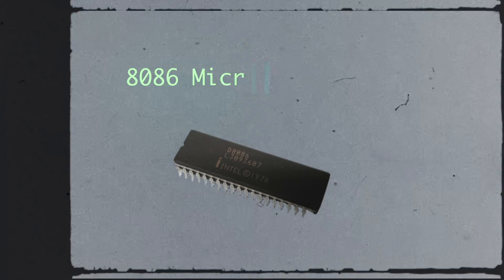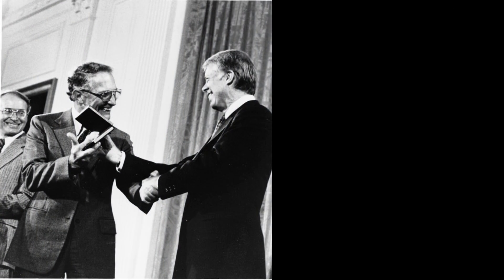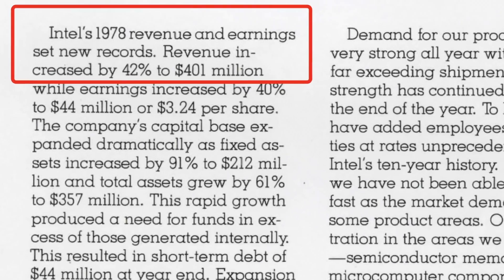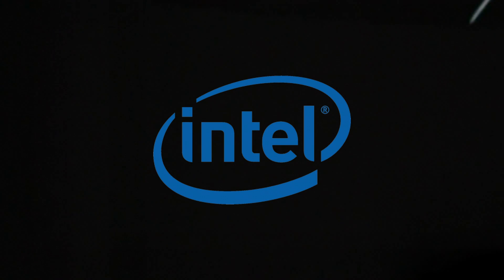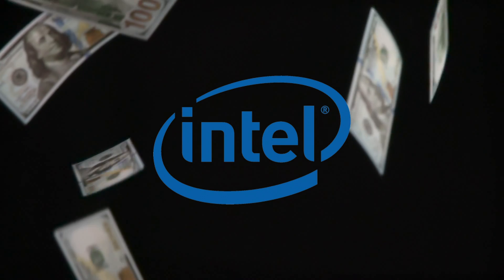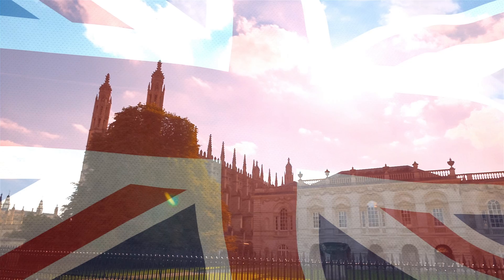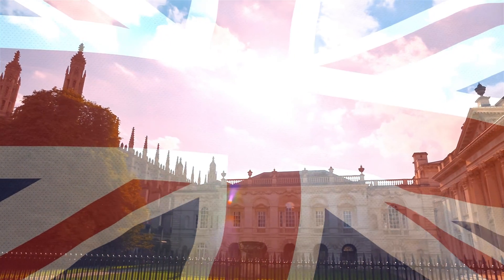In the last video, we took it back to 1978 and how the 8086 microprocessor was introduced, creating a monumental shift in computing. While Intel in 1978 recorded $400 million plus worth of revenue and clearly had the semiconductor market cornered with the x86 architecture, a team across the pond was cooking up something revolutionary.